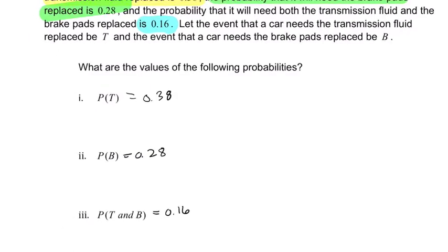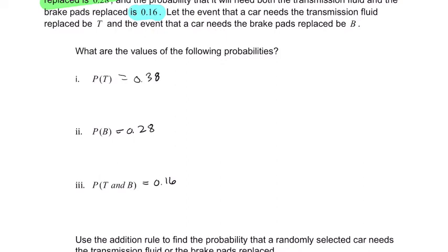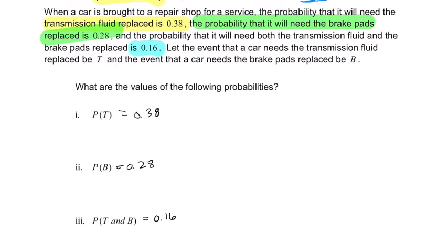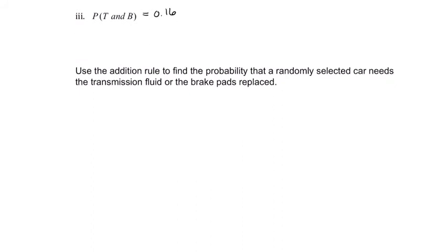And they want to know, let's see, they're defining that T is for transmission and B is for brakes, which I think we could infer. Use the addition rule to find the probability that a randomly selected car needs the transmission fluid or the brake pads replaced.